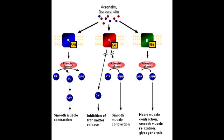The histamine receptors that are G-protein linked and act through second messengers include histamine-1 and histamine-2. The G-protein linked vasopressin receptors that act through second messengers are V1 and V2 receptors.